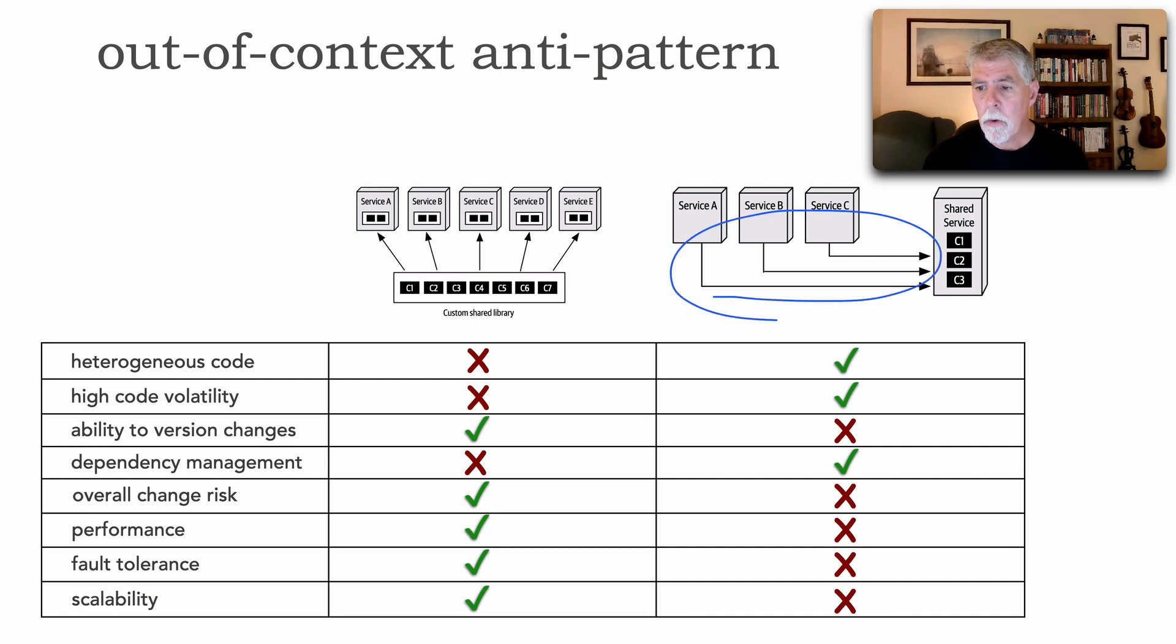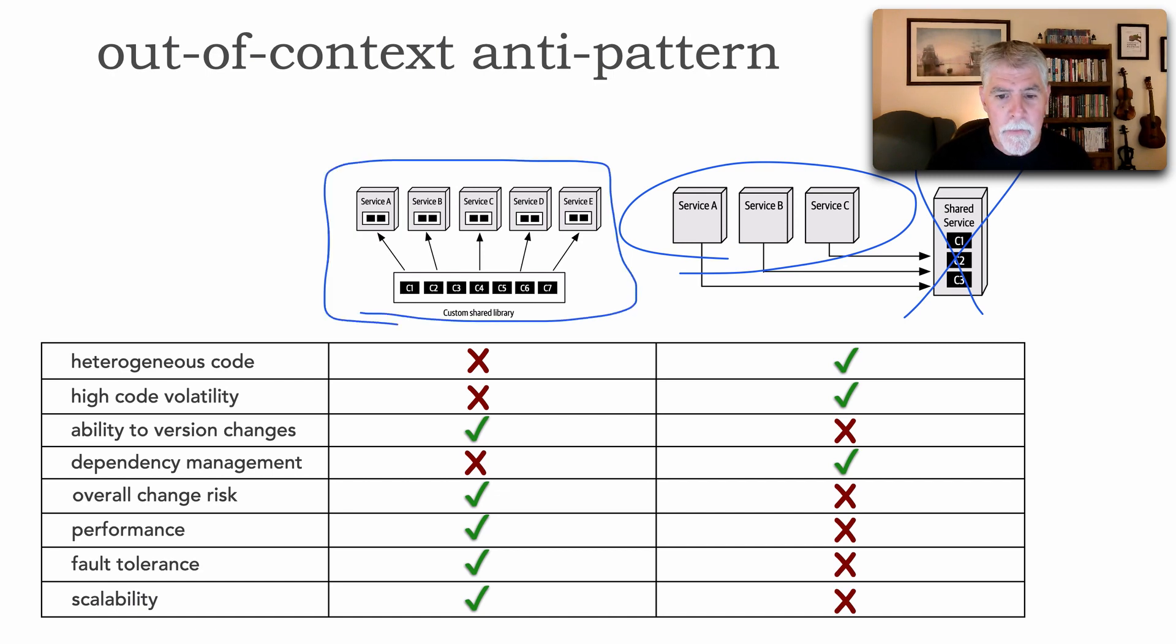First of all you notice I have latency here. So that's one problem I have and that latency is in terms of network security and also data latency. But also fault tolerance because if I lose that shared service then all of these become non-operational because I can't get to that common functionality. But notice with a custom library this is a compile time binding so there's nothing to fail in terms of that shared service.